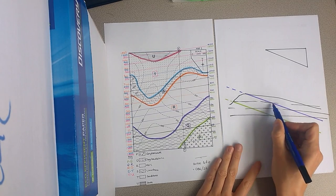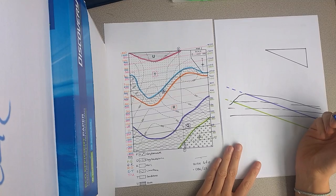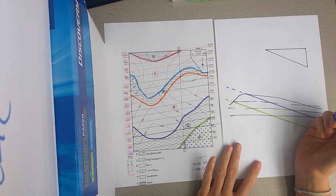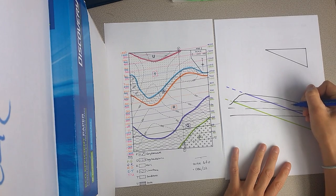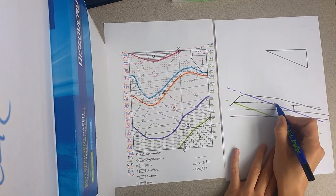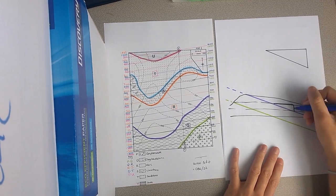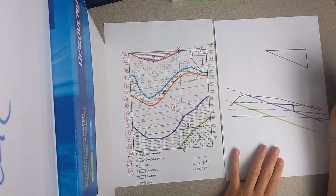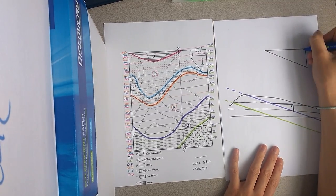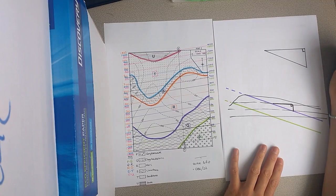All right, so if we want to work out the dip on this, what we're going to do is we're going to look at the vertical distance between the structure contours and the horizontal distance. And then we're going to use trigonometry to work out the dip because that forms a right angle triangle.